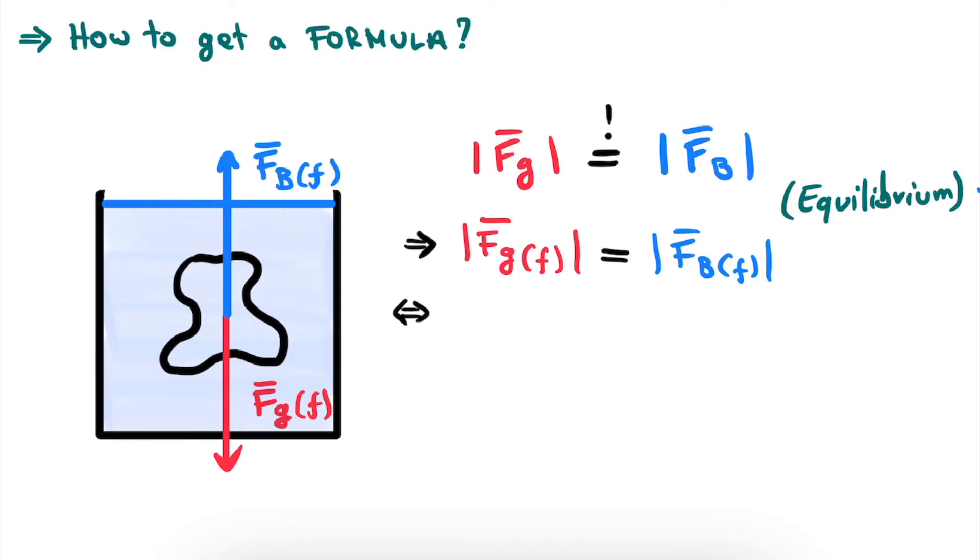We can rewrite the force of gravity as being the mass of the object multiplied by the gravitational constant. And then the mass of the object in turn can be rewritten as the volume of the object multiplied with its density, where Vf is the volume of the object that is submerged in the fluid. And in this case, it's the entire object itself.